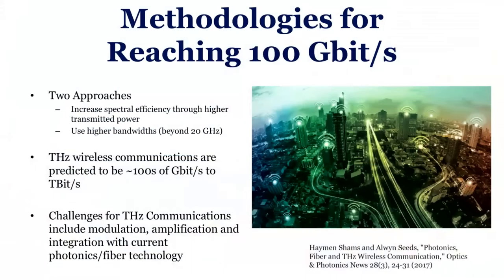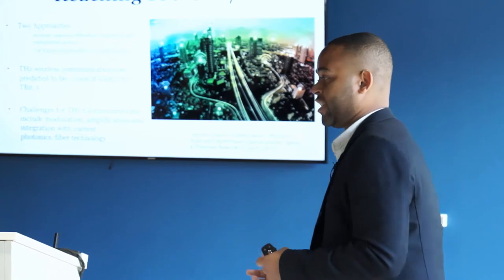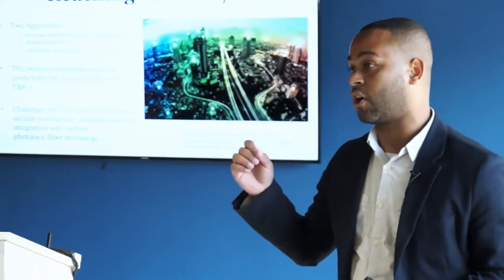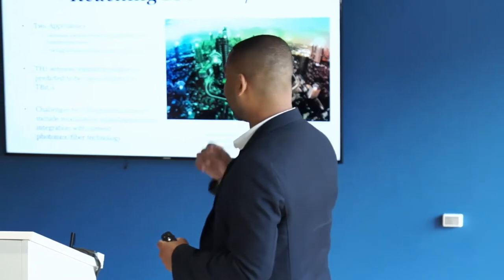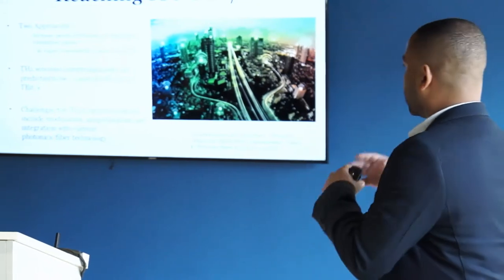So how exactly can we achieve something that fast? There are actually two approaches. The first is that you can work with the technology we have now — make it more efficient or increase the power. The second approach would be to go to a higher bandwidth, something like over 20 gigahertz, and that brings us into this regime of something called terahertz. Terahertz is 10 to the 12 hertz, or one trillion hertz — 1,000 times larger than gigahertz. A lot of research is currently being done by my group and others to reach this goal of hundreds of gigabits per second.